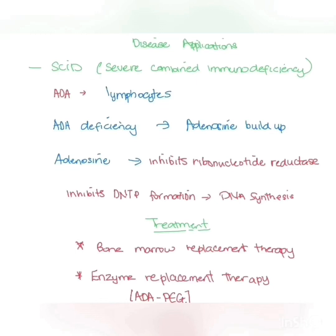Now let's look at some disease applications. Severe combined immunodeficiency, or SCID, affects the levels of lymphocytes. Lymphocytes are the site for major ADA activity. If there is ADA deficiency, this can cause a buildup of adenosine. Adenosine inhibits ribonucleotide reductase, which inhibits dNTP formation. If there is no production of dNTPs, then DNA cannot be synthesized.